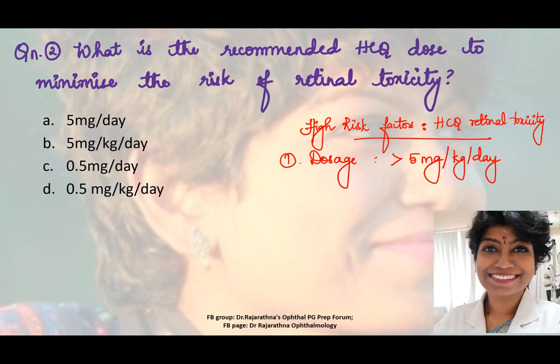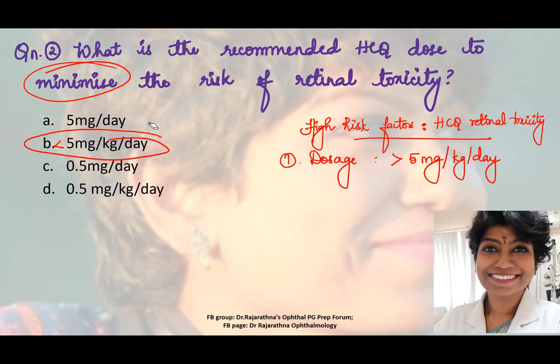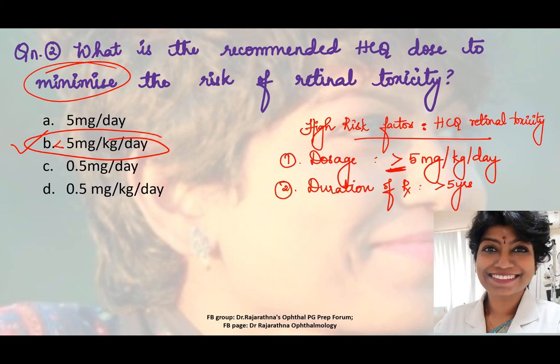The recommended dose is less than five milligrams per kilogram per day — we are talking about per kilogram dosage, not a flat daily total. The maximum should be five mg/kg/day; above that it becomes a high-risk factor. Duration of treatment is another high-risk factor: when it is more than five years, the risk of hydroxychloroquine toxicity increases.